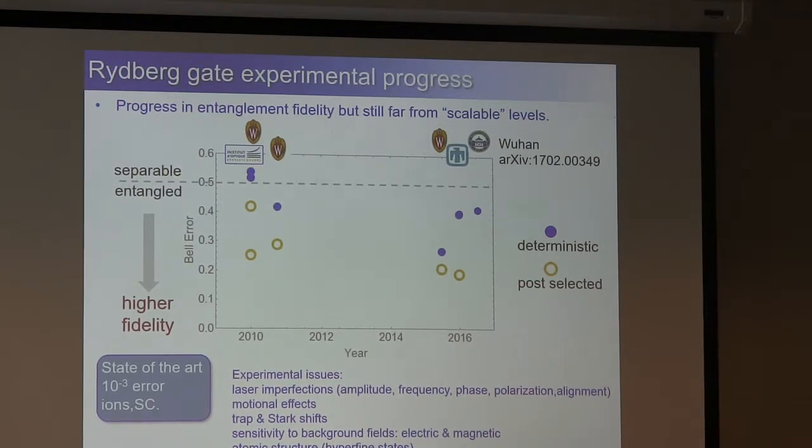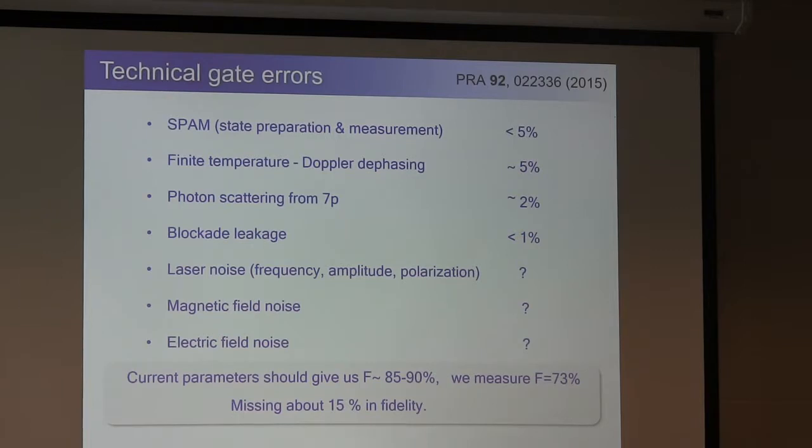There's a lot of experimental issues. And we'll talk more about these in the session tomorrow morning. But there's laser imperfections, amplitude, frequency, phase, polarization, alignment, motional effects, trap and Stark shifts, sensitivity to background fields, electric and magnetic, also atomic structure. So I'll talk and give some more details tomorrow, but we can make a kind of error budget for the gate that we did and try and estimate where we should be. And there's state preparation measurement errors. Given our finite temperatures for those experiments, there's a Doppler dephasing term, about 5%. There's photon scattering from the intermediate level. There's a little bit of blockade leakage. We're only at about 20 megahertz blockade. And then there's some unknowns, laser noise, magnetic and electric fields. Current parameters should reasonably put us here, 85 to 90. We measured 73. So sort of missing 15%. So where's that 15%?